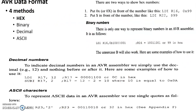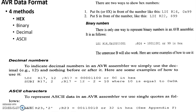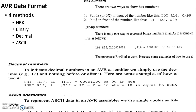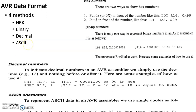Now we will see AVR data formats. AVR generally supports four different data formats. There are four methods of representing data in AVR: hexadecimal, binary, decimal, and ASCII — that is the American Standard Code for Information Interchange.